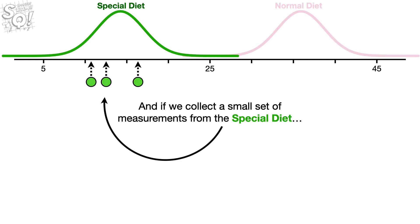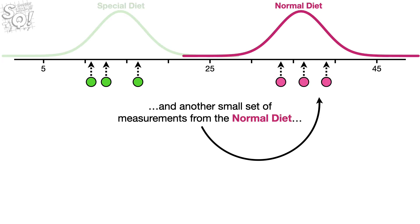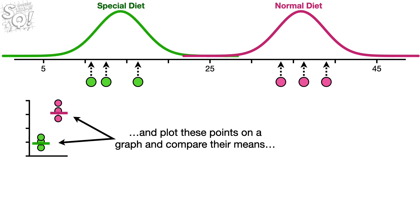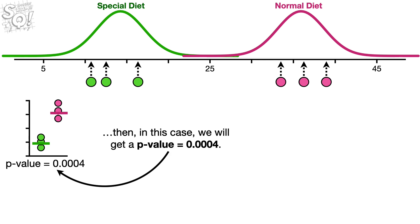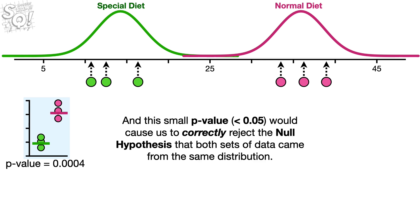And if we collect a small set of measurements from the special diet, and another small set of measurements from the normal diet, and plot these points on a graph and compare their means, we'll get a p-value equal to 0.0004. And this small p-value, less than 0.05, would cause us to correctly reject the null hypothesis that both sets of data came from the same distribution.